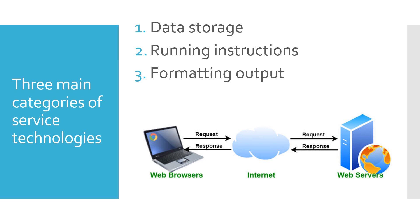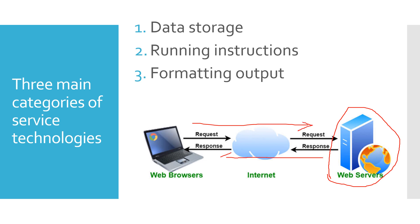When we talk about the internet, things are happening in two places: either at the web server, which is a big computer that stores web pages and serves them to you. You send a request for a certain URL page and the web server sends the data back so that you get a web page displayed on your web browser. Your computer is called the client side, and the web server side is called the server side.